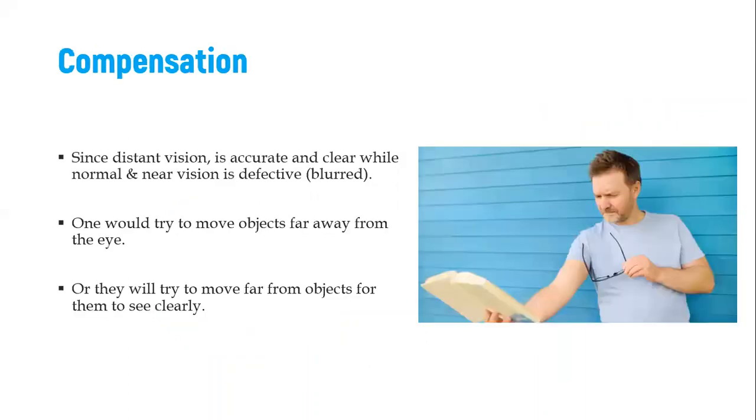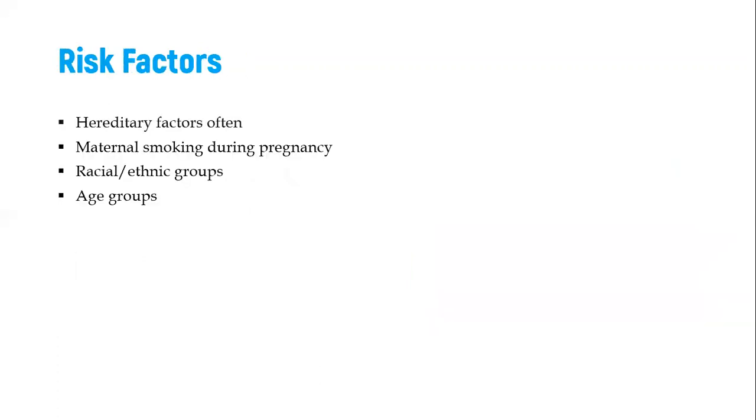Therefore, we'll have to compensate for this. So compensation happens in a way that one will try to actually move objects further away from their eyes so that actually the light can converge at the retina, or they will have to move away from the object to actually see clearly. So that is the actual compensation that is made so that the light does not converge behind the retina.